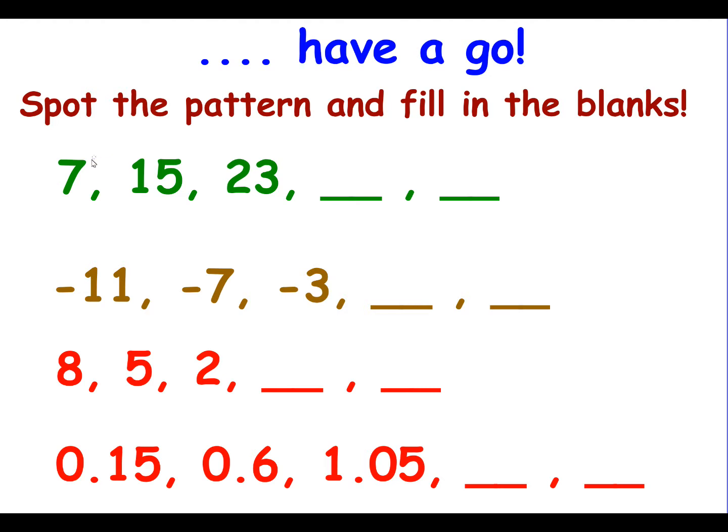OK, let's look at the first one. Our rule to get from 7 to 15 is add 8. Check the rule by looking at the next one along which is add 8. So in order to find the missing numbers, keep adding 8 to your numbers. So the missing numbers are 31 and 39.